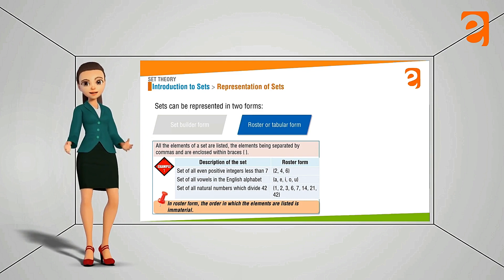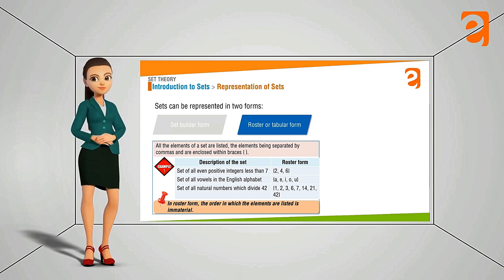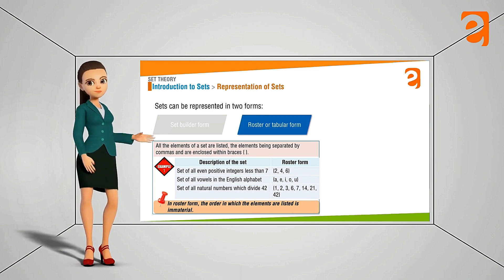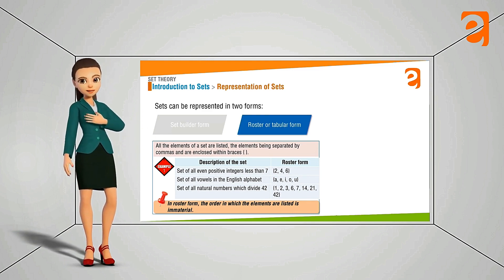So what is roster form? It is actually all the words, letters or the numbers written inside the curly bracket separated by a comma. One thing to be remembered here is that look at the first example. It is 2, 4, 6.